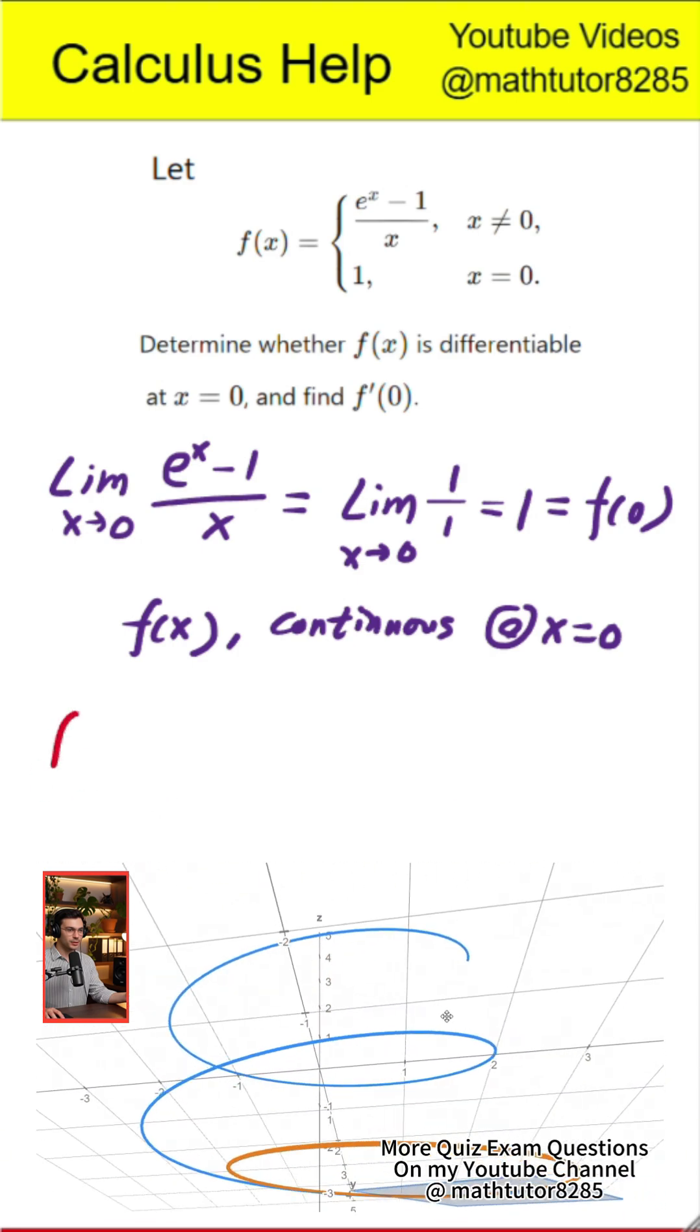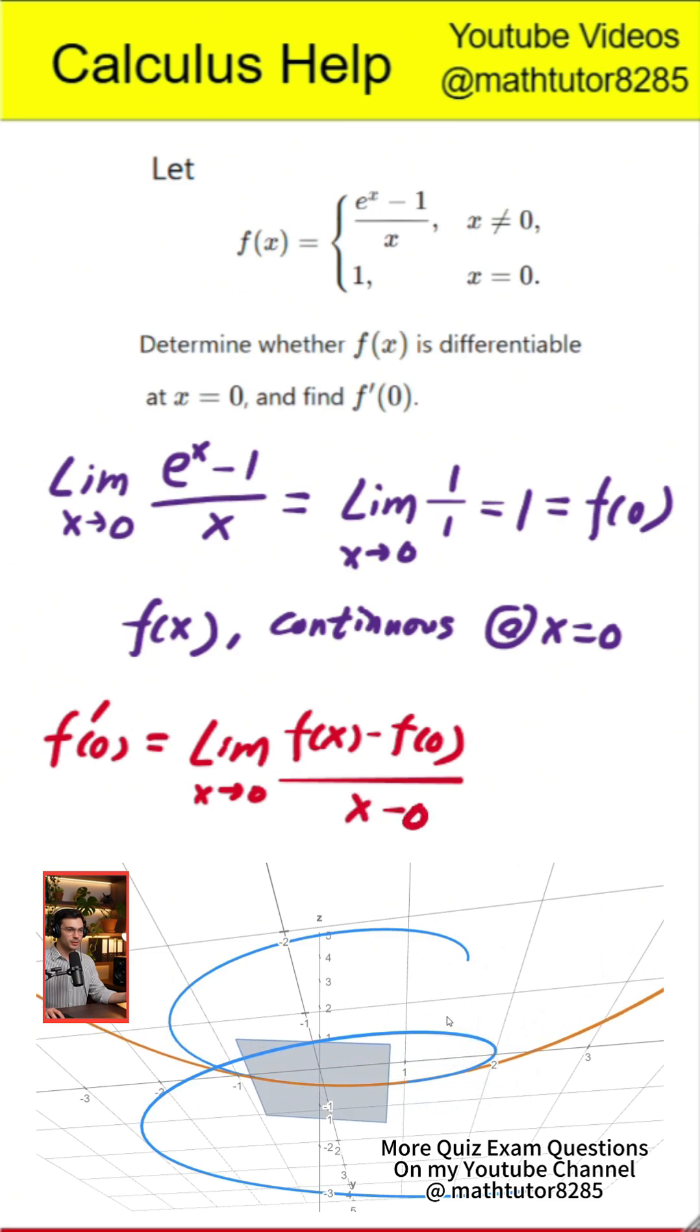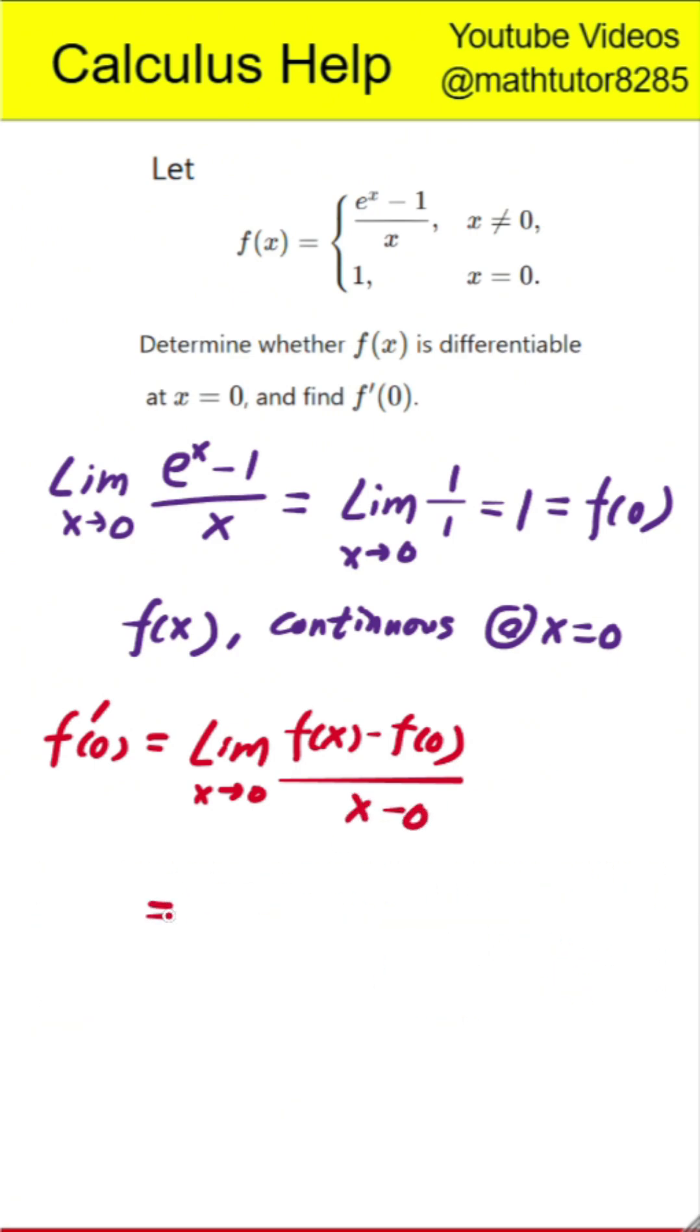Next step, computing the derivative at x equals 0. By the definition of the derivative, f prime of 0 is the limit as x approaches 0 of the difference f of x minus f of 0 divided by x.